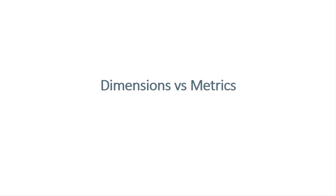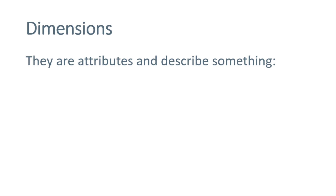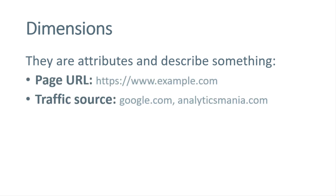Before we continue, I wanted to give you a quick introduction to metrics and how they are different from dimensions. This applies not only to Google Analytics but to all analytics tools in general. Dimensions are attributes of something — for example, attributes of a product, an event, or a user — and they describe something. Here are several examples: page URL is a dimension, traffic source can be google.com or analyticsmania.com, and then we have coupon code, item category, and user country.